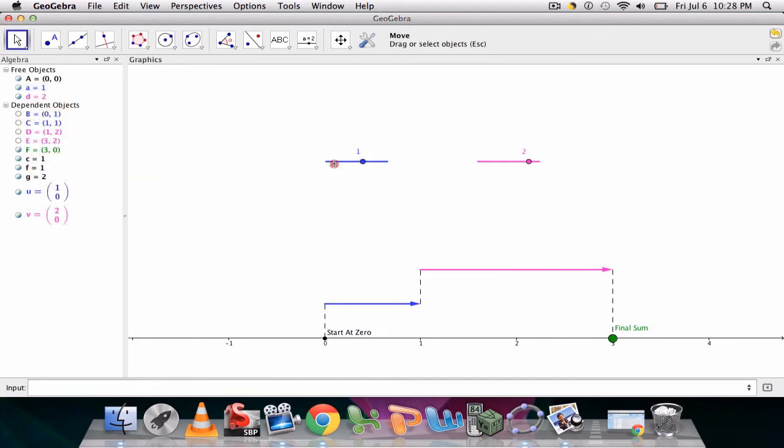So you can move it around in your graphics view. Now you probably, once you have it in the spot you want, it's a good idea to right-click it and fix the object. Let me go back and say you don't need the algebra view to do that.